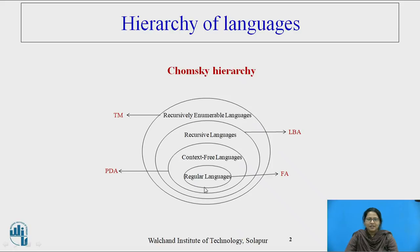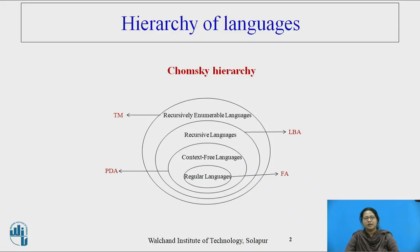Regular language, context-free language, recursive language, and recursively enumerable languages — all are accepted by Turing machines.